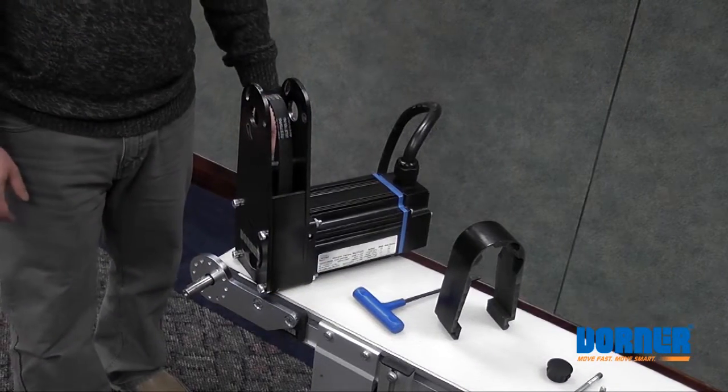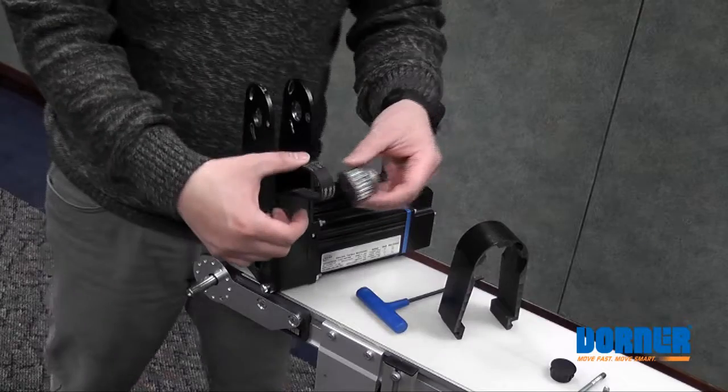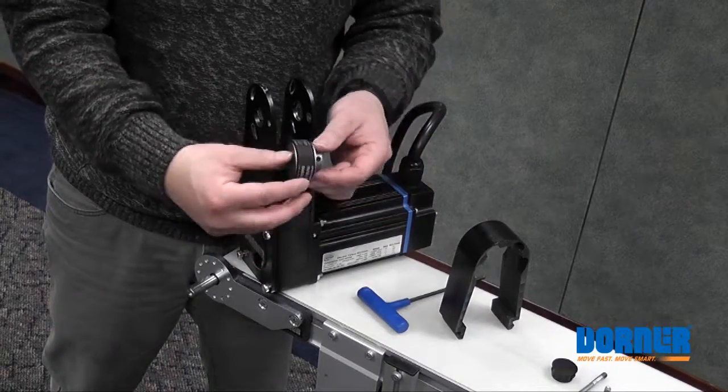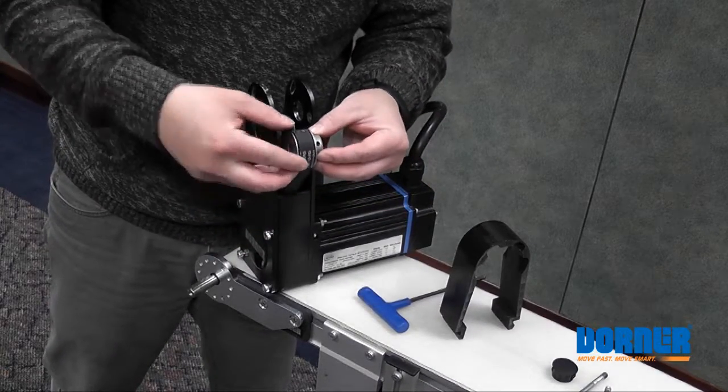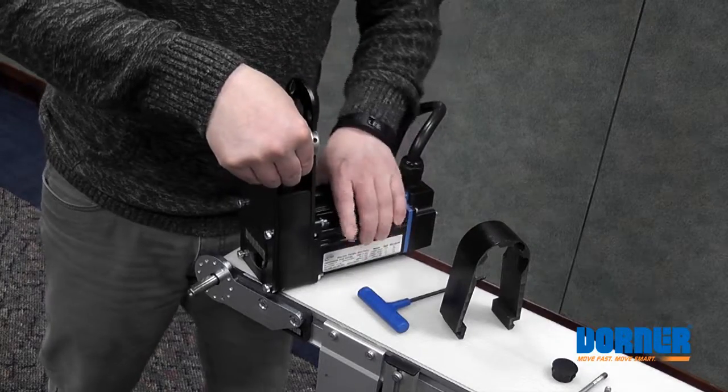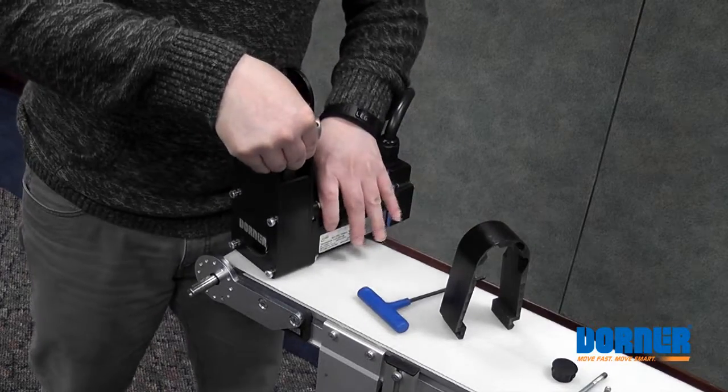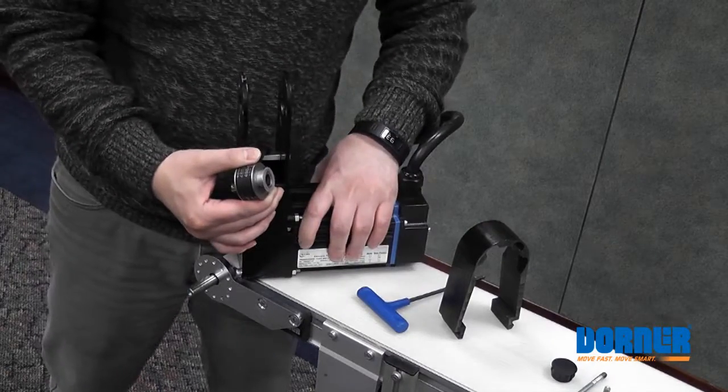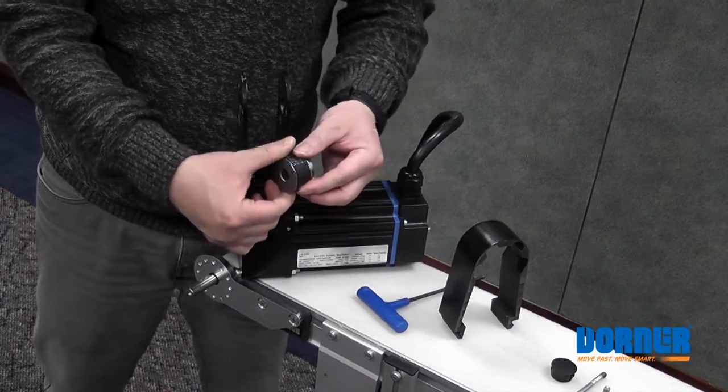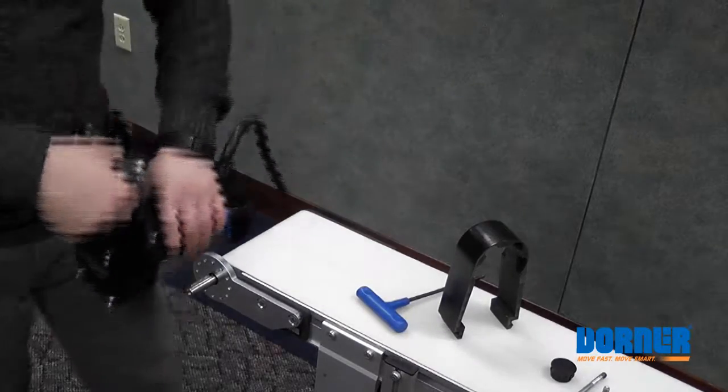Next, we want to position the pulley inside the mount package. The timing belt simply slides off to the side and the pulley slides in. Note that the flat face of the pulley needs to be facing away from the conveyor frame. Here we are mounting the motor in an inboard configuration on the A side.